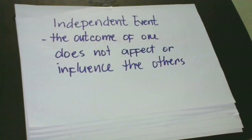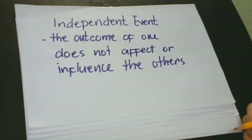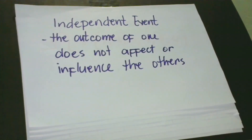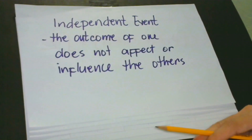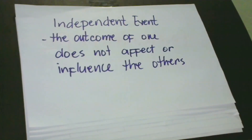In this lesson, we will consider tossing a die — but instead of one, we are going to have two. Our assumption is that each throw is independent, meaning the first throw is an independent event, and so is the second, and so on and so forth.